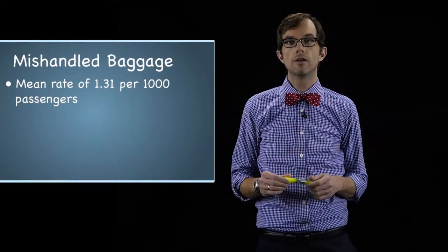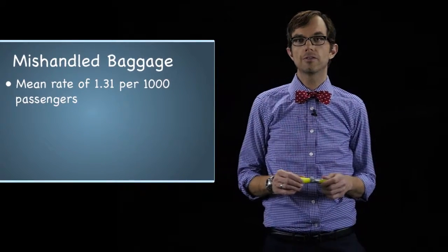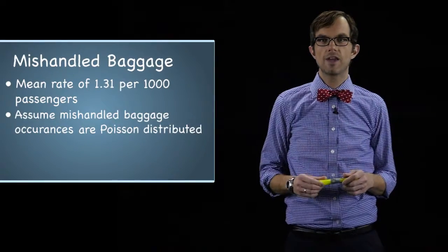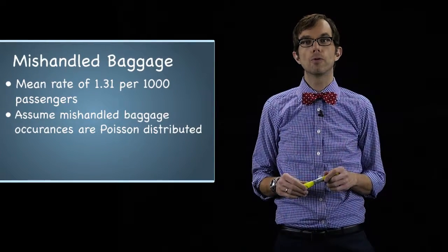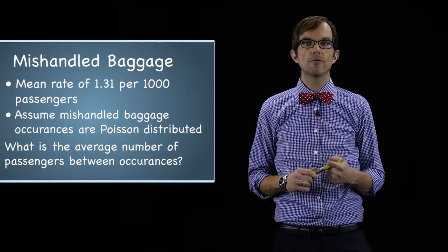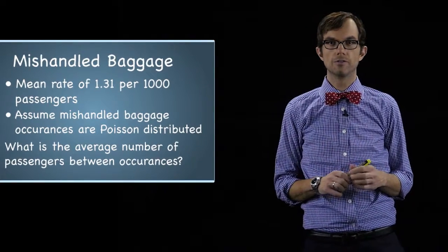Let's take a look at another example. The U.S. Department of Transportation reported that in a recent year AirTran led the nation in the fewest occurrences of mishandled baggage, with a mean rate of 1.31 mishandled bags per 1,000 customers. Assume mishandled baggage occurrences are Poisson distributed. What is the average number of passengers between occurrences?